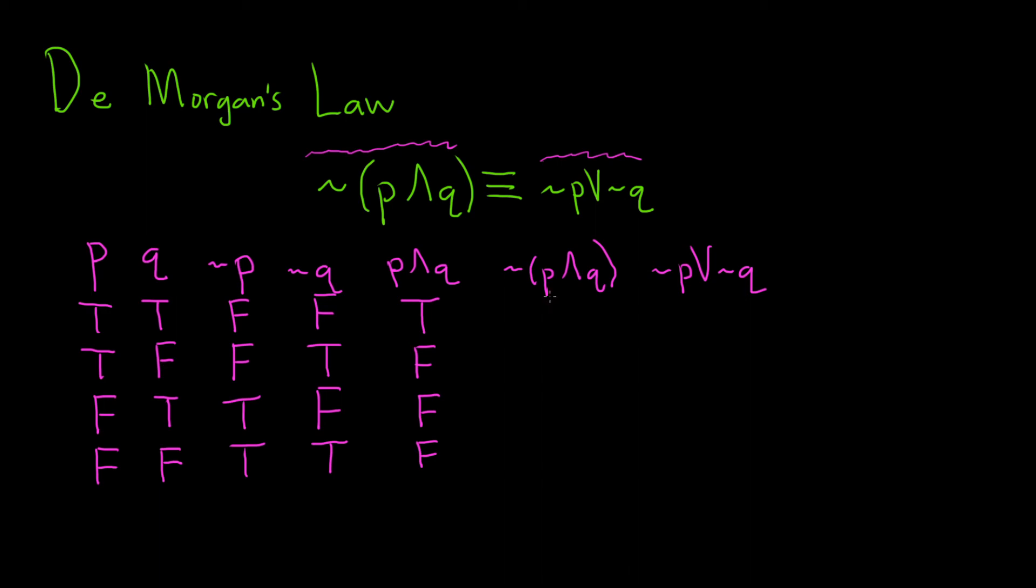The negation of p and q takes on the opposite truth value. So you just switch it. So true becomes false, false becomes true, true, and then true here as well. Just switching them.